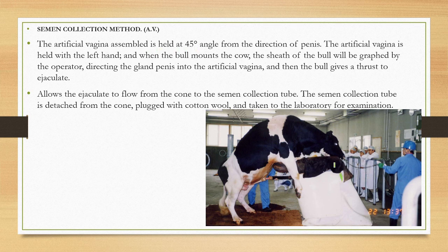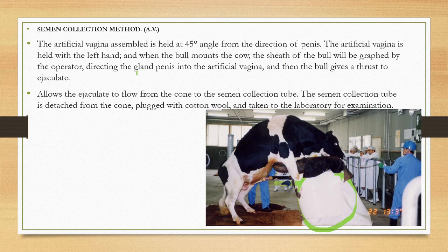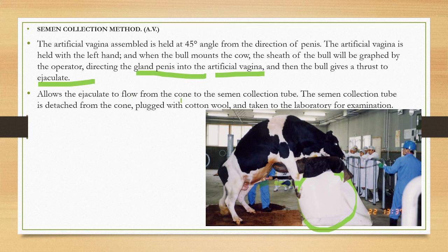The artificial vagina assembly is held at a 45-degree angle. This is the dummy cow, and this is the artificial vagina, held with the left hand. The bull mounts on the dummy cow and the sheath of the bull is directed by the operator, guiding the glans penis into the artificial vagina. The bull gives a thrust to ejaculate, and the semen flows from the cone to the semen collection tube.